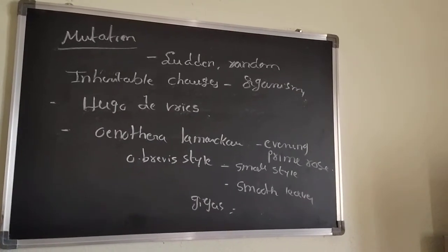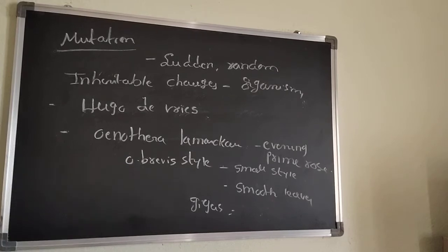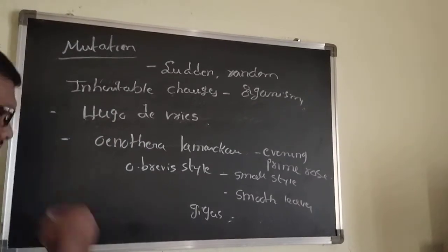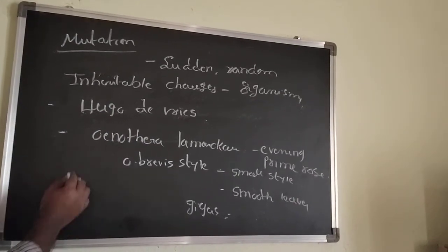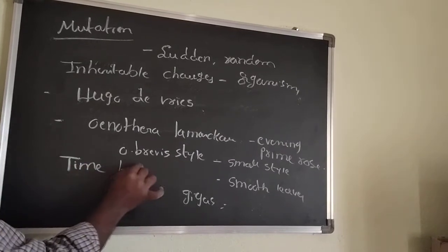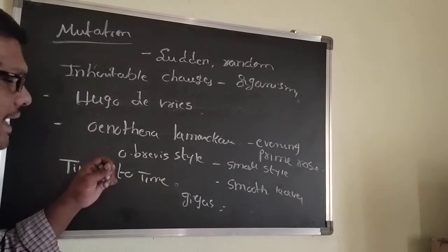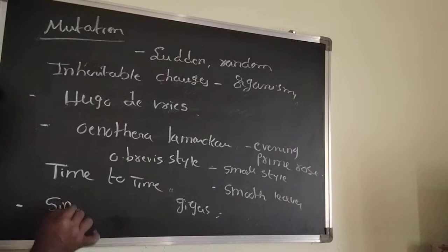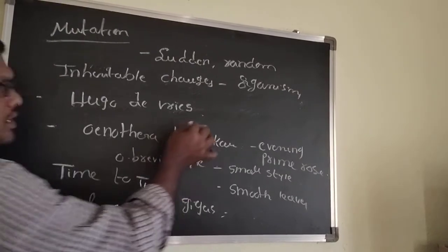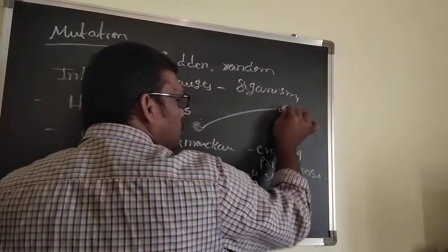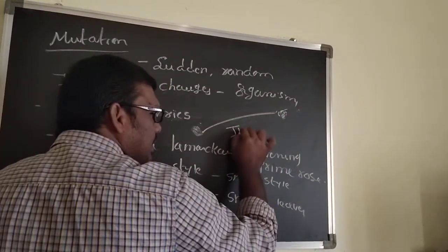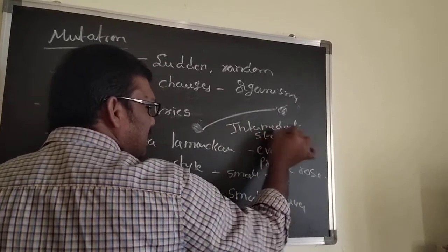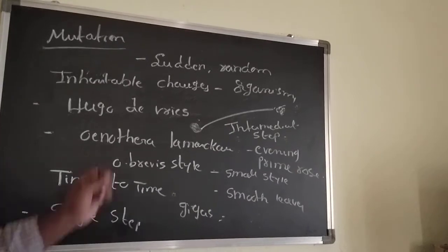T.H. Morgan also observed mutation characters in Drosophila. The salient features of mutation are: mutation occurs from time to time in nature; it is the raw material for evolution; and mutation is a single-step process — a new species is formed with no intermediate steps between the original and new species.